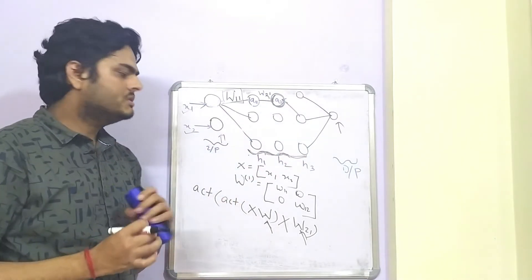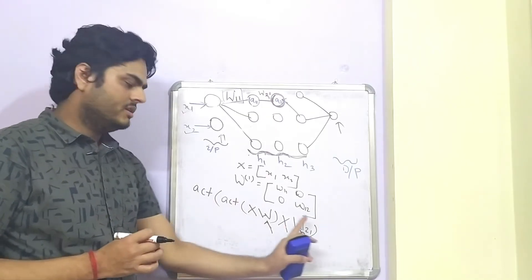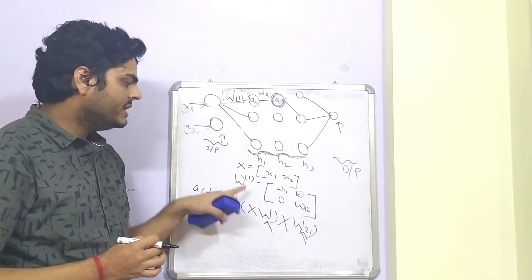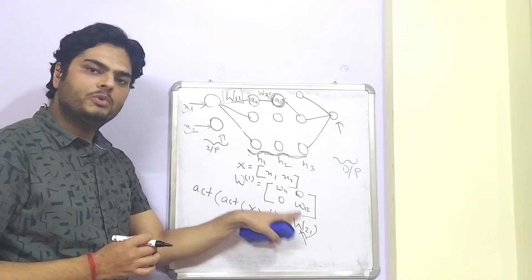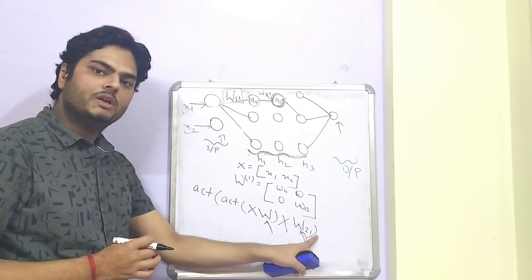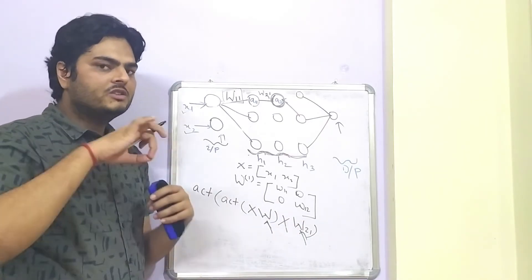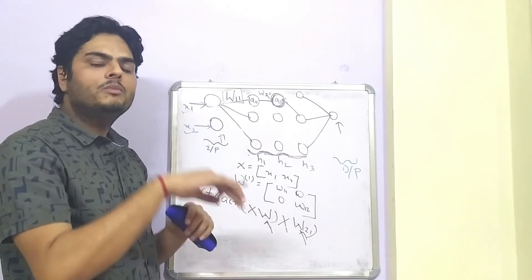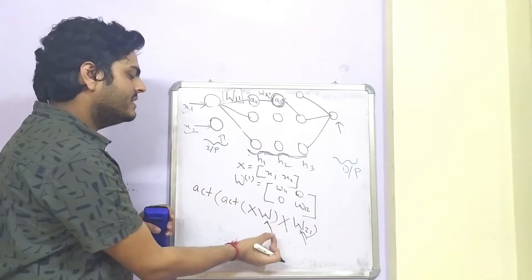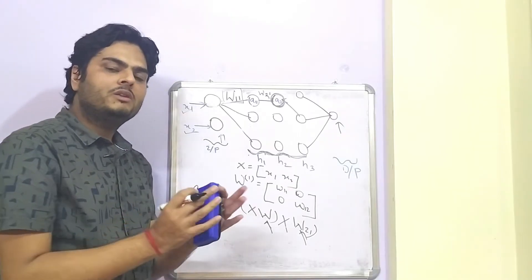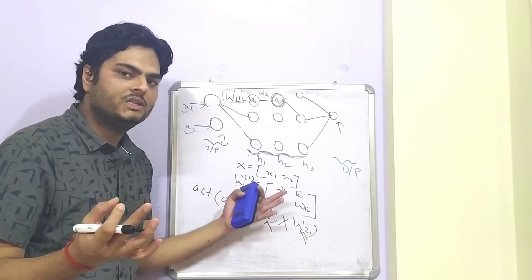Now, what happens when your weights are smaller? Here we have in this w, we have w11 and w12 both. Here we have w21. So, when the weights are smaller, then their multiplication will become more small. When the weights are larger, then their multiplication will explode will become too large.